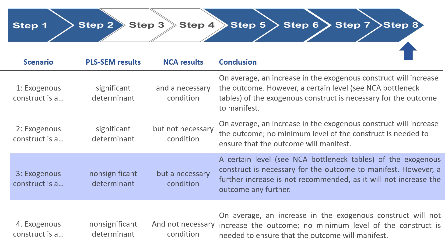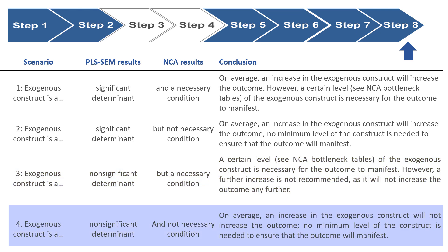If it's a non-significant determinant but a necessary condition, we can say that a certain level of X is necessary for Y to be achieved, but a further increase is not recommended as you will not increase the outcome any further.